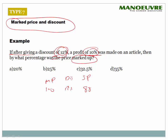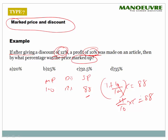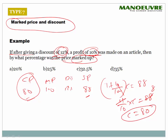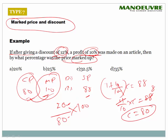Since SP = 88 gives 10% profit, cost price = 88/1.10 = 80. We bought the product for 80 rupees but marked it at 100 rupees. Markup value = 20 rupees. Markup percent = 20/80 × 100 = 25%. Answer is 25%.